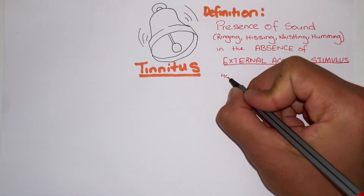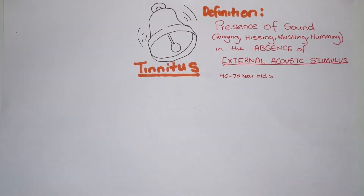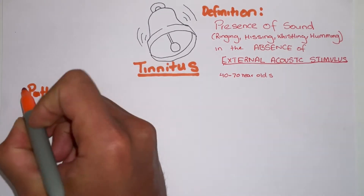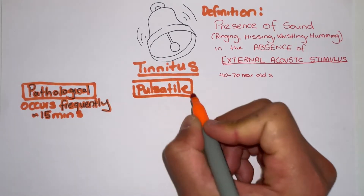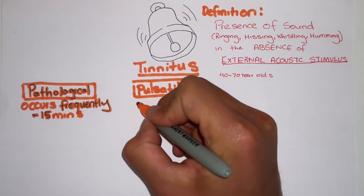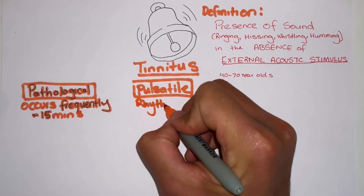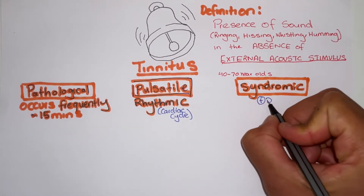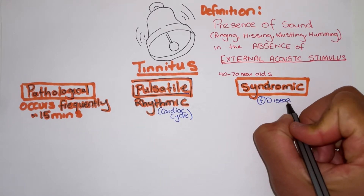This normally occurs in those over 40 and below 70. There are three types of tinnitus. Pathological: this is when it occurs frequently and for about 15 minutes. Pulsatile: this is when the tinnitus syncs with the cardiac cycle. And syndromic: this is when it is part of the symptoms of a disease.